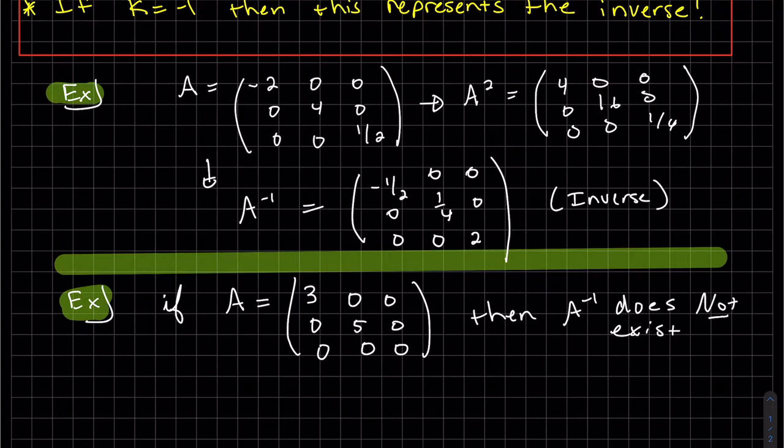It's a different example. If this is our A and one of our diagonals is 0, and we flip that around, take the inverse of it, it will be 1 over 0, which means that A inverse does not exist.